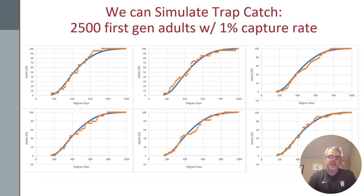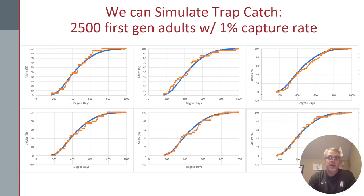We can simulate these phenomena and show that when there are a certain number of adults in an orchard and you only capture a certain percentage of them, how it might actually look when comparing what we see in our fields to the phenology model. On the next slides, in every panel the blue line represents the phenology model predicting a perfect emergence curve of codling moth, and the orange or red line shows the potential trap catch based on a simulation. Studies show that only about 1% of codling moth in an orchard are actually captured in traps, and if we assume we catch 1%, we can reflect the phenological model pretty well in our trap catch data.